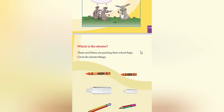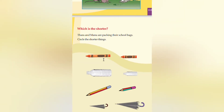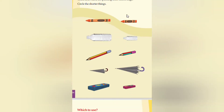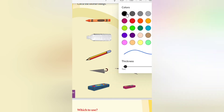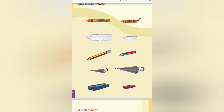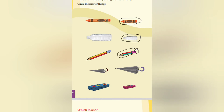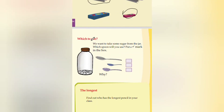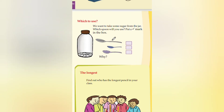In the next page, which is the shorter: Thara and Manu are packing their school bags. Circle the shorter things. This one seems to be smaller. Here this pencil is found to be smaller. This box is smaller.